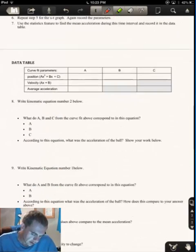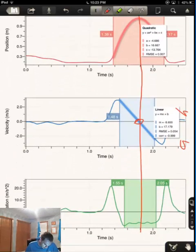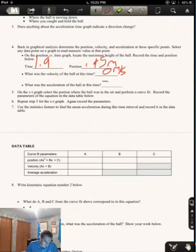What was the acceleration of the ball at this time? Well, if we look at our acceleration graph right in here, that looks to be almost negative 10 meters, so I'm going to go with negative 9.8 meters per second per second.